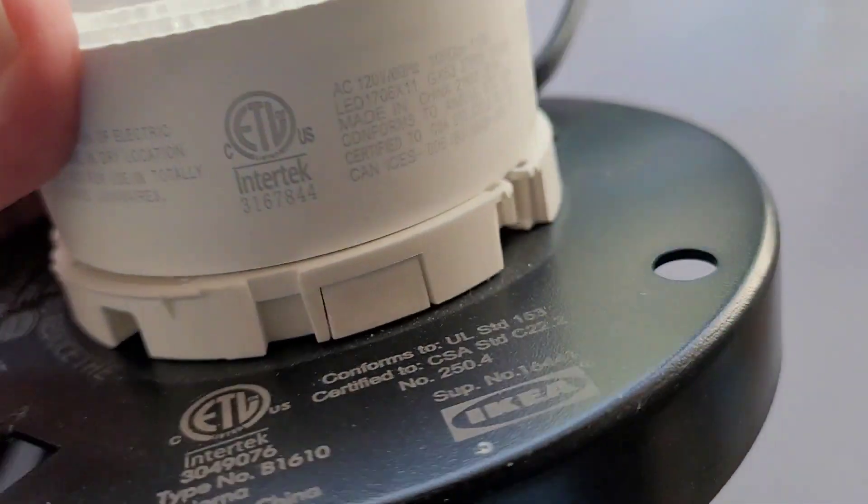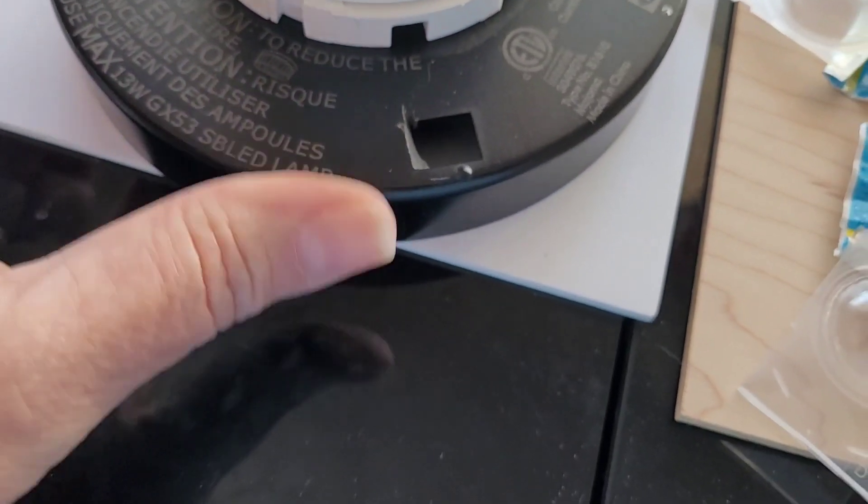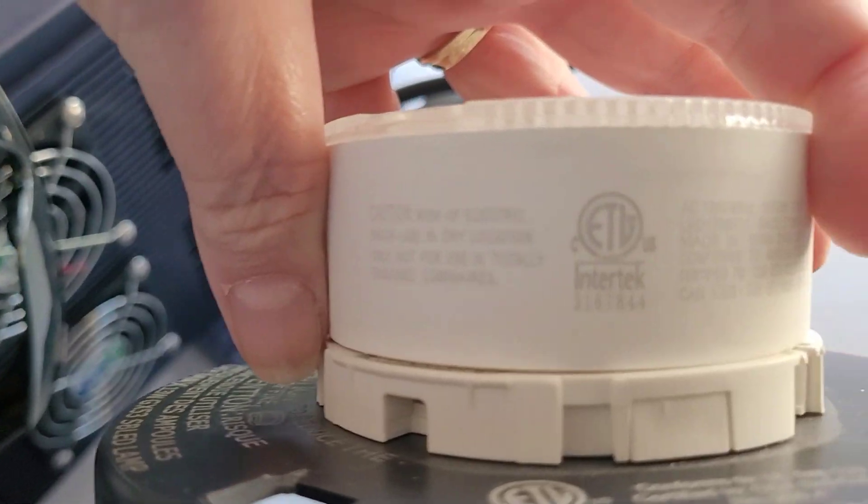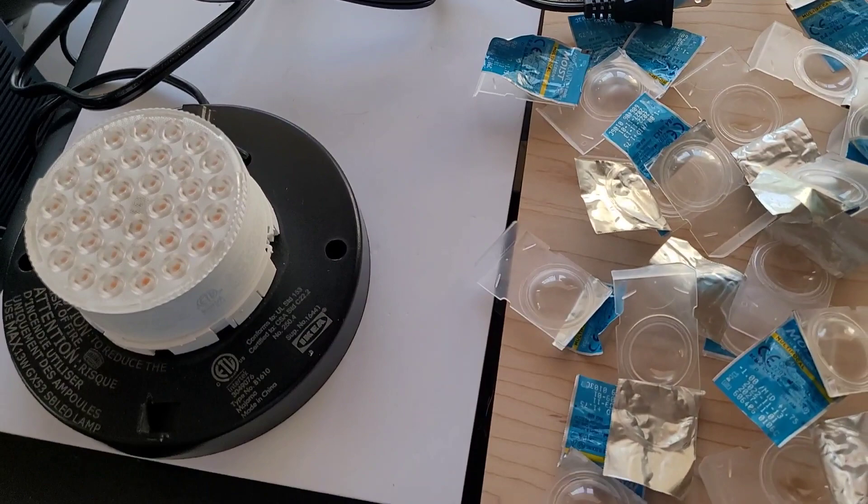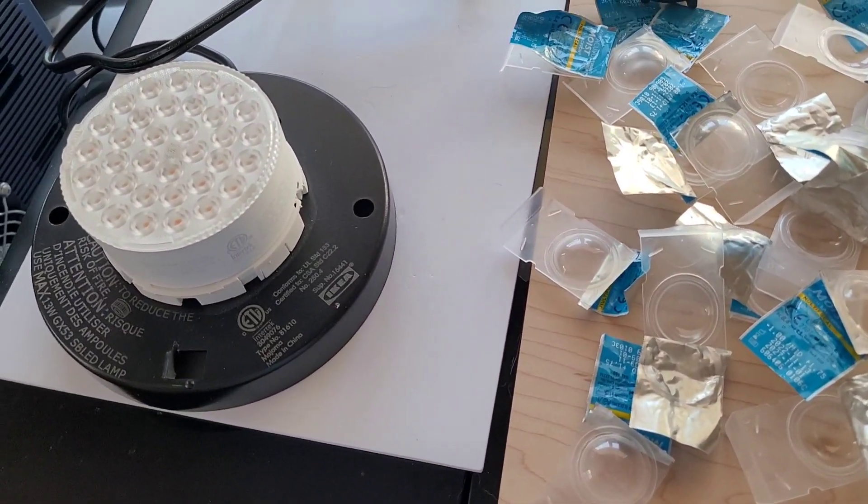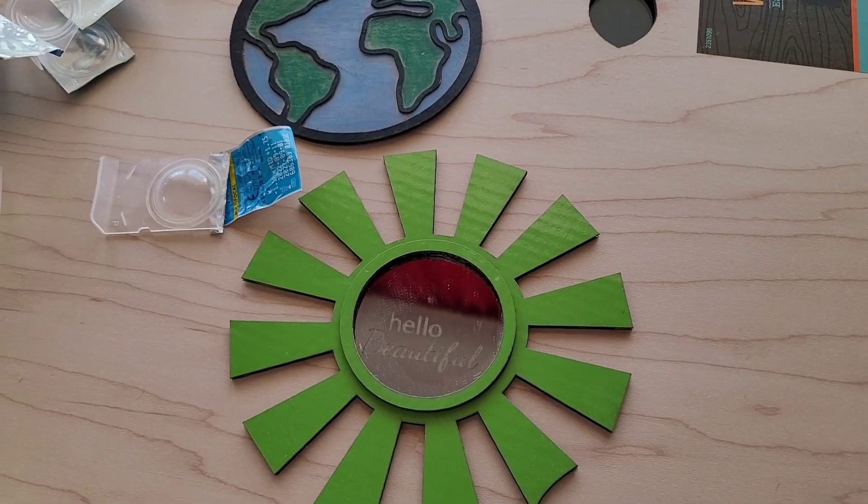But what I'm thinking today is to make a lamp. Now I have this old IKEA lamp. These LED lights that are really nice. It used to have a paper shade, which was really cool. But the paper shade has long since been destroyed. They just don't last very long. And so what I'm thinking is...